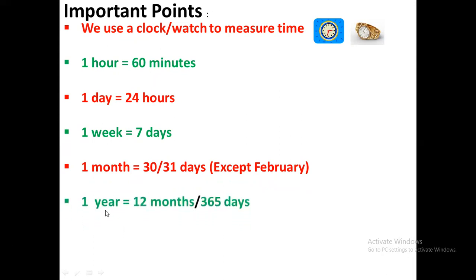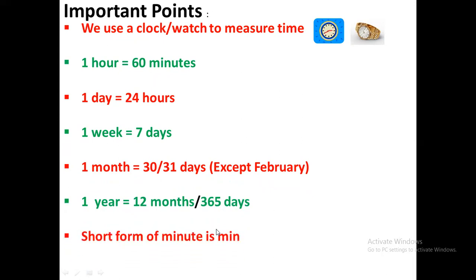One year is a very long time. One year has 12 months: January, February, March, April, May, June, July, August, September, October, November, and December. There are 365 days in one year.